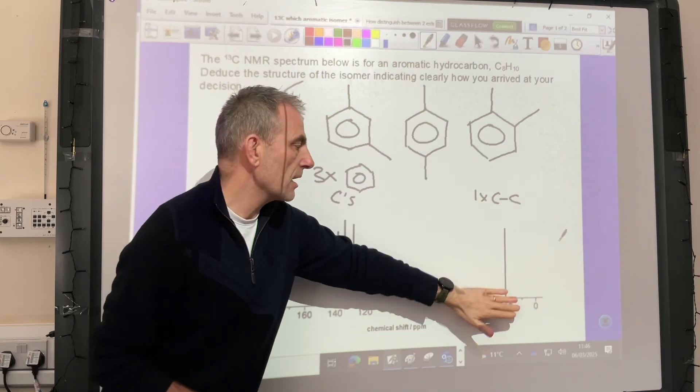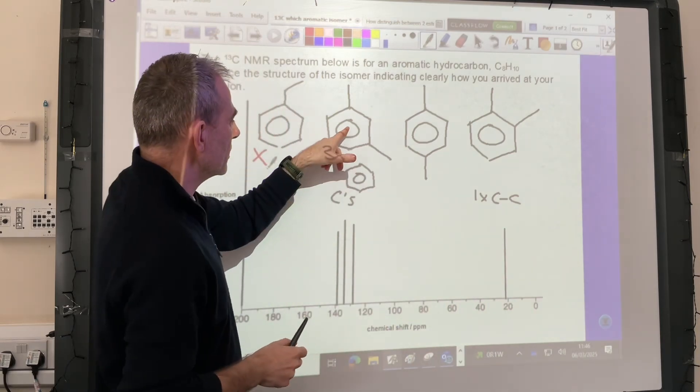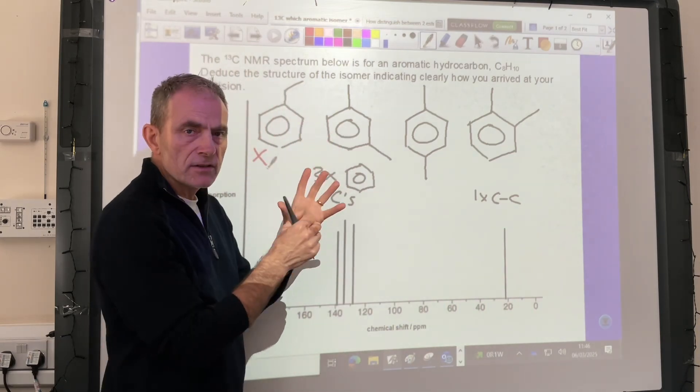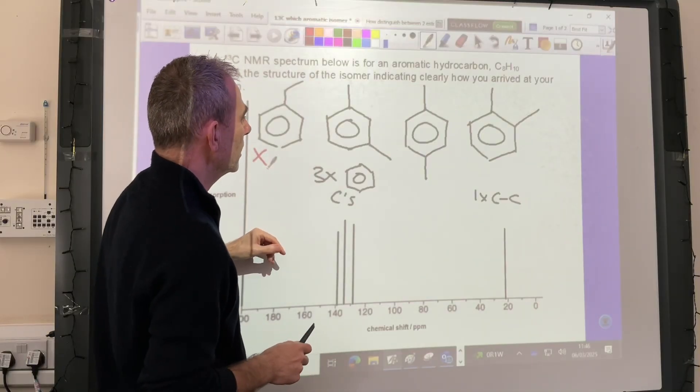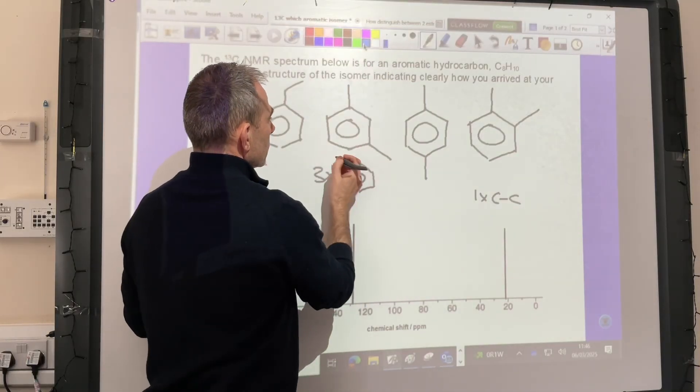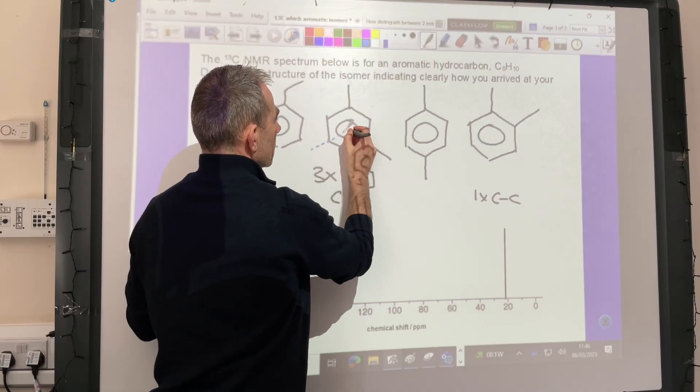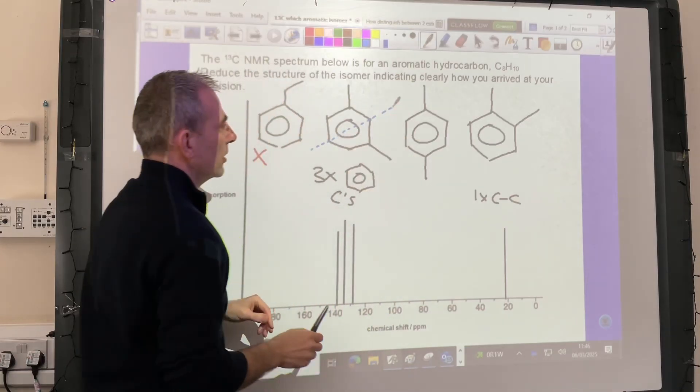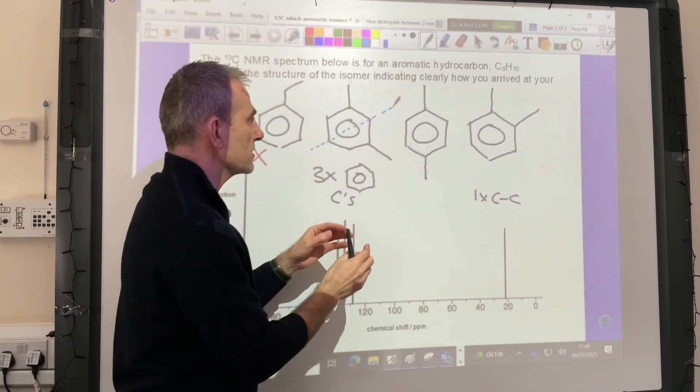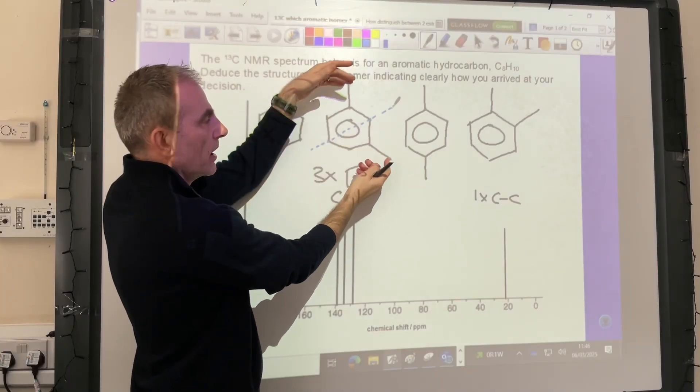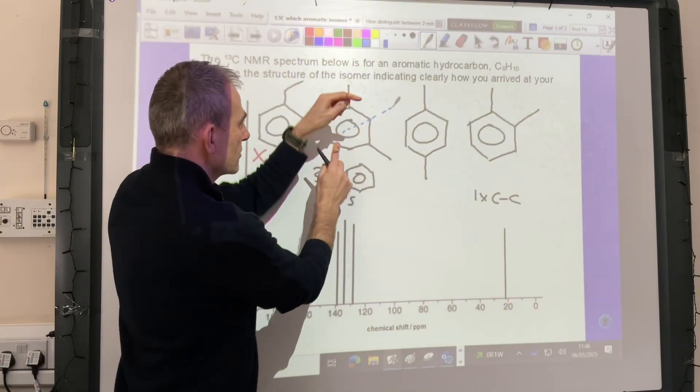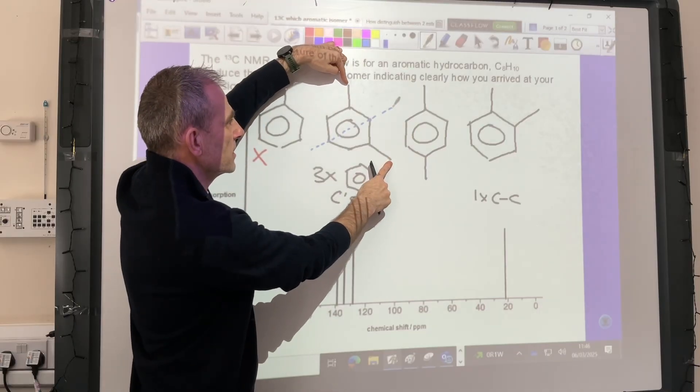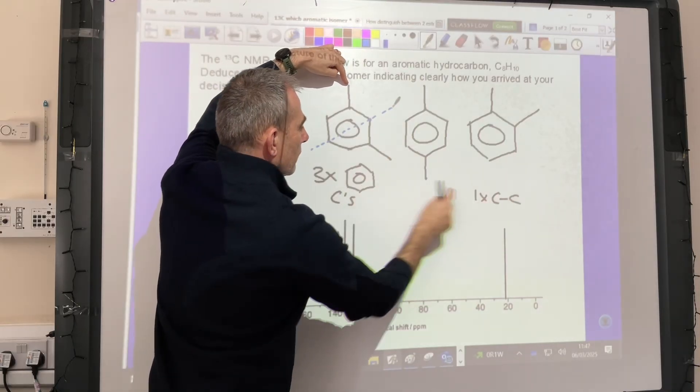Moving on to this one here, the good thing to look for is symmetry - lines of symmetry in your molecule. Hopefully you agree that there's a line of symmetry here in this molecule. What that means is carbons either side of that, sort of equidistant, are equivalent to each other. So these two carbons here are both C to C environments, and there's just one environment.